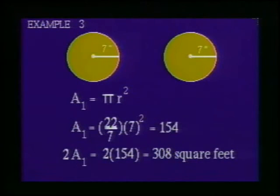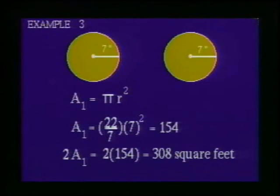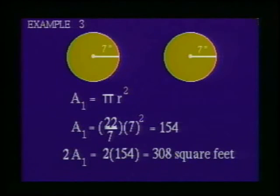Example 3: Find the total surface area of the cylinder. First, we must identify the shape of the bases and the lateral surface. The bases are circles. We can calculate the area of a circle using A₁ = πr². Substituting 7 for r and using 22/7 for π, we get A₁ = 22/7 × 7² = 154 square feet. Since a cylinder has two congruent circular bases, we double 154 to obtain 308 square feet for the area of both bases.